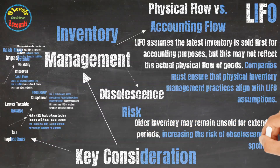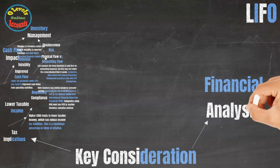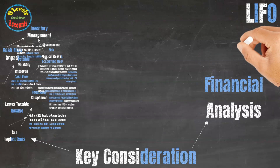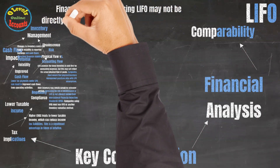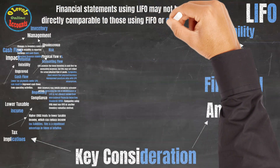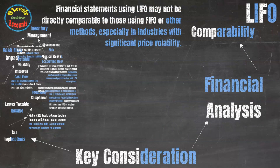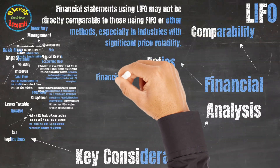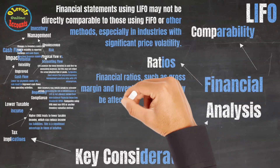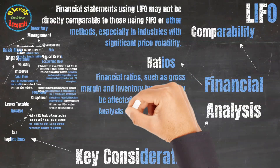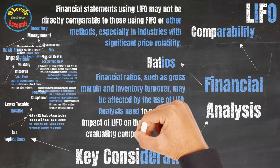The fourth key consideration is financial analysis. First, comparability: financial statements using LIFO may not be directly comparable to those using FIFO or other methods, especially in industries with significant price volatility. Second, ratios: financial ratios such as gross margin and inventory turnover may be affected by the use of LIFO. Analysts need to consider the impact of LIFO on these ratios when evaluating company performance.